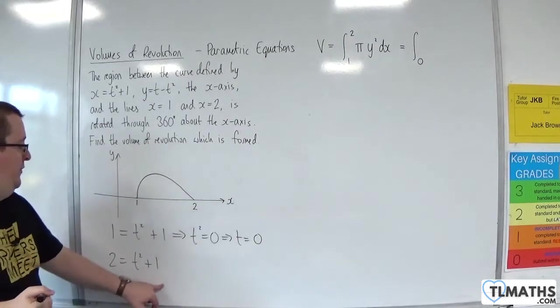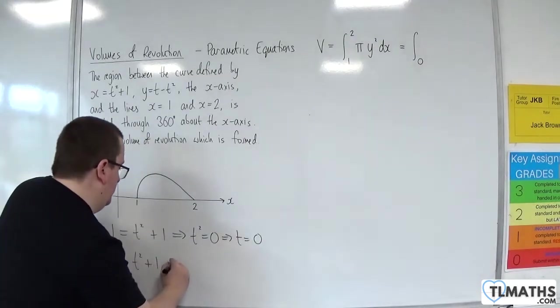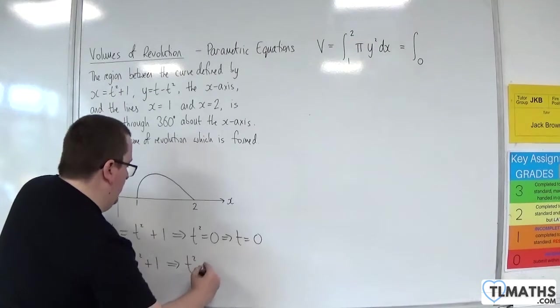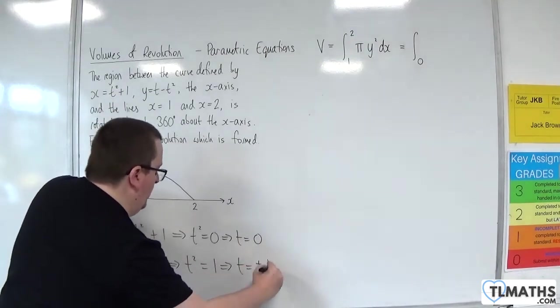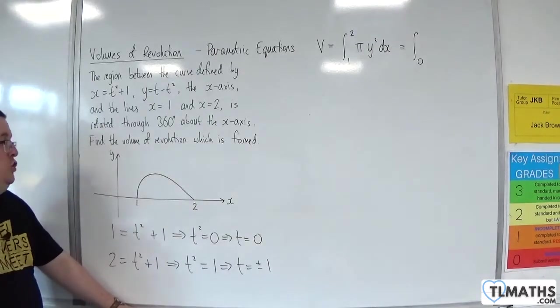And we've got 2 is equal to t squared plus 1, so subtract 1 from both sides. So t squared is equal to 1, which means t is equal to plus or minus 1. Now, which should we use?